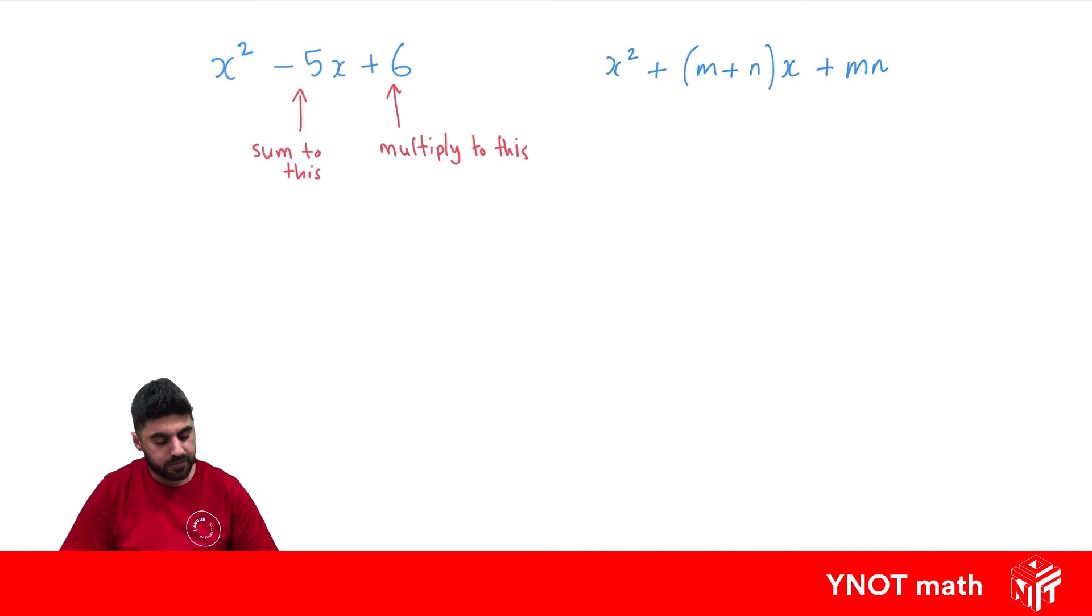So what are two numbers that multiply to 6 but add up to -5? The first thing we want to do is write a couple of pairs of brackets to factorize, and we'll write an x in front of each one.